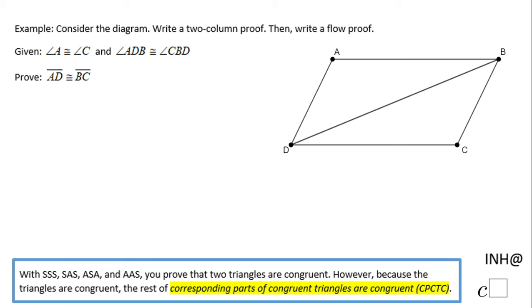Welcome back to iNeedHelpAtCSquared. In this example, we need to write a two-column proof and then a flowchart or flow proof. What is given is that angle A is congruent to angle C.